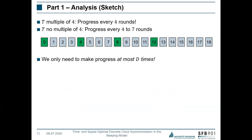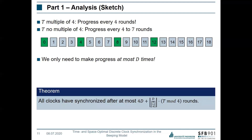We show that this protocol synchronizes all nodes within O(d) rounds. To briefly sketch the analysis: we show that progress is made every four to seven rounds, depending on whether t is a multiple of four. Progress means that more nodes get into sync with each other. We also show that at most d steps of progress are needed. Combining these two facts gives an overall runtime in the order of d.